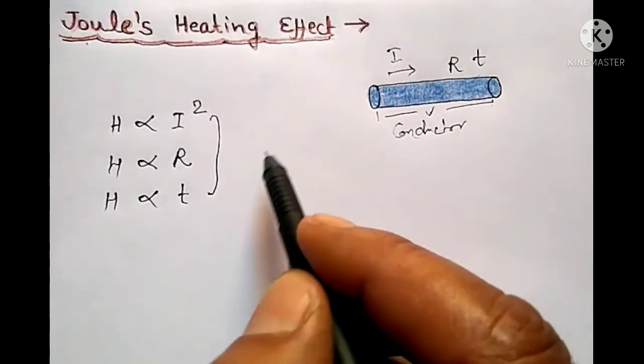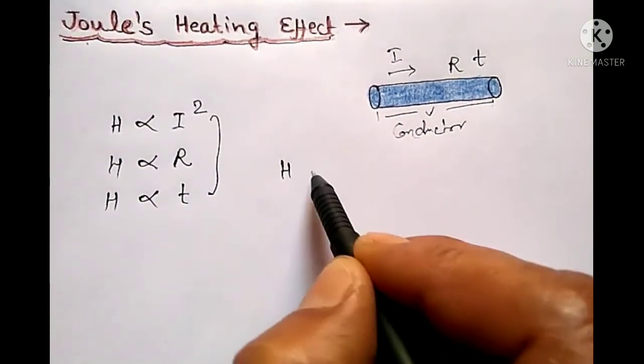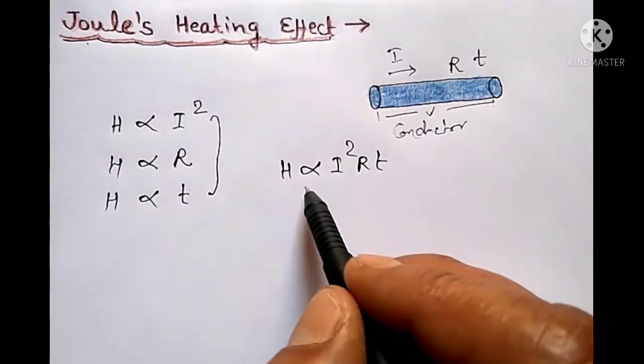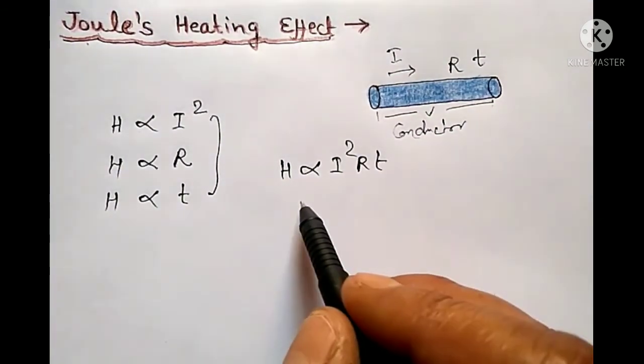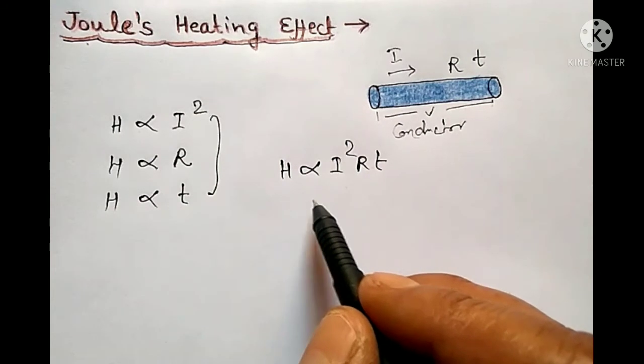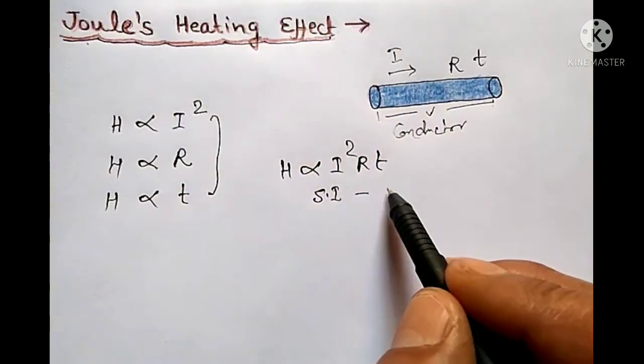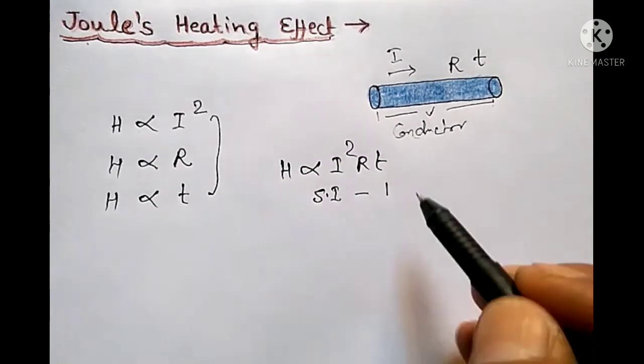So by combining these, we get H directly proportional to I squared R t. To remove this constant of proportionality, we take a constant, and in SI system, the value of constant of proportionality is 1.